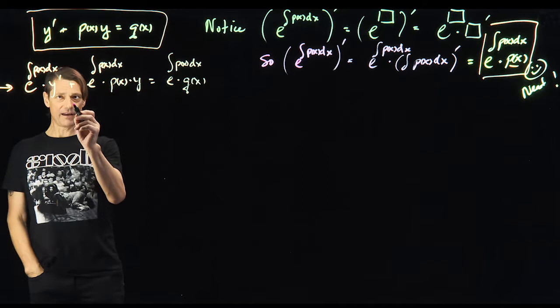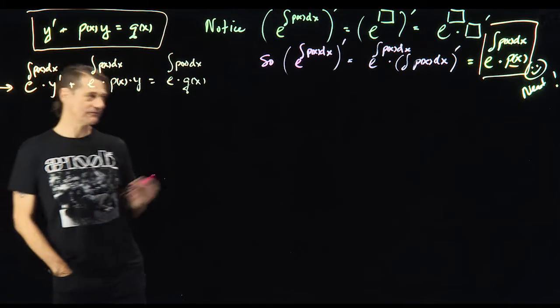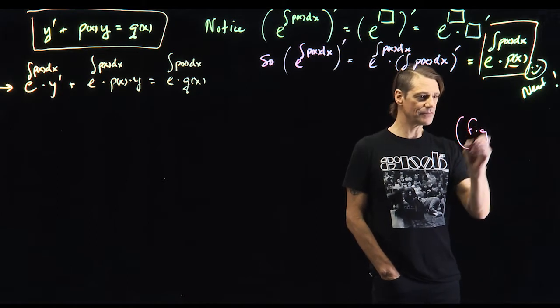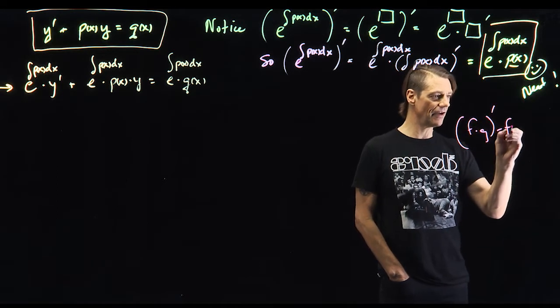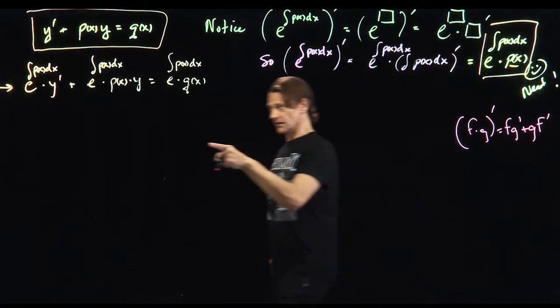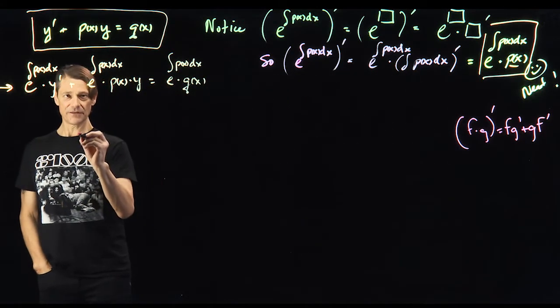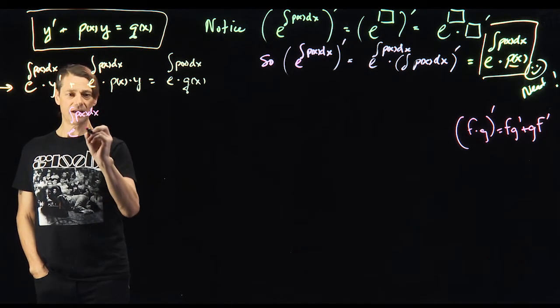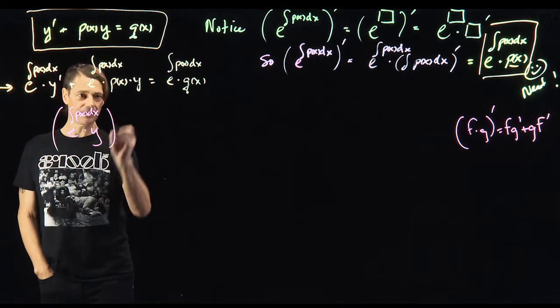You look at this and go, hey, this looks kind of like a product. Remember the product rule. If you have this, f times g, the derivative is f g prime plus g f prime. Here's, like, what if we did this? What if we do e to the antiderivative of p of x dx times y, and take the derivative of this?